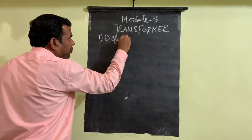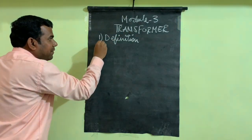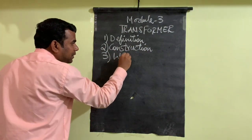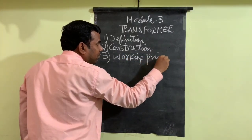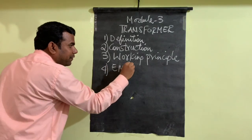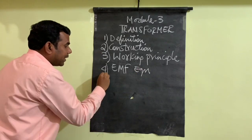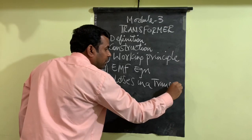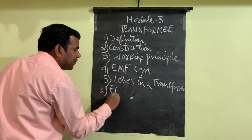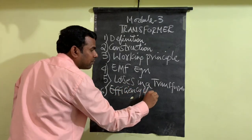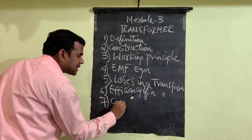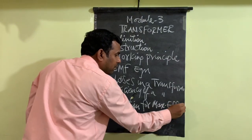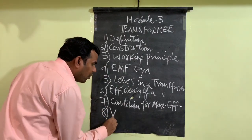The first one is definition of transformer. Second one is construction of transformer. Third one is the working principle. Fourth one is the EMF equation of transformer. Fifth one is losses in a transformer. Next one is efficiency of a transformer, followed by condition for maximum efficiency, and lastly voltage regulation of a transformer.